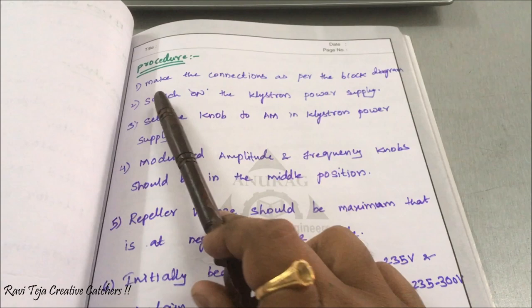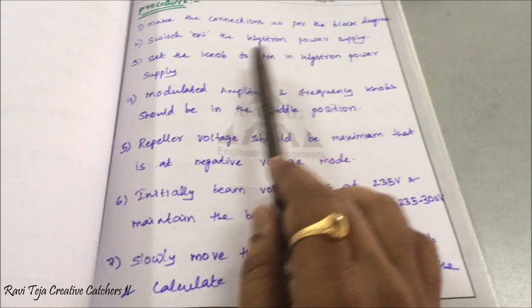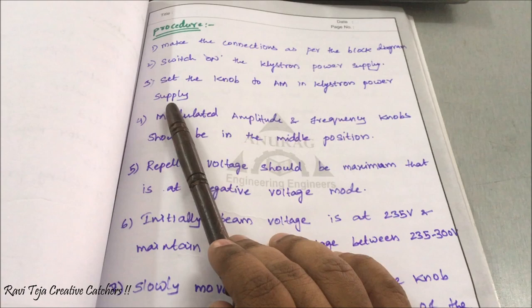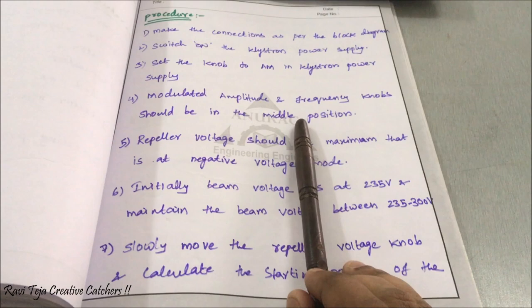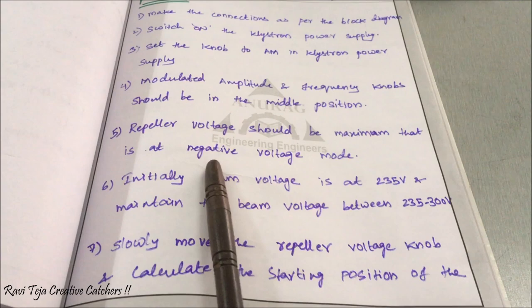Make the connections as per the block diagram, then switch on the klystron power supply. After switching on, set the modulator selector knob to AM mode. The modulated amplitude and modulator frequency knob should be in the middle position so that we can provide a good amount of amplitude and frequency to the microwave signal.